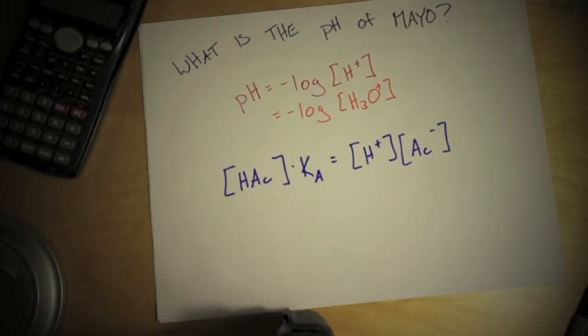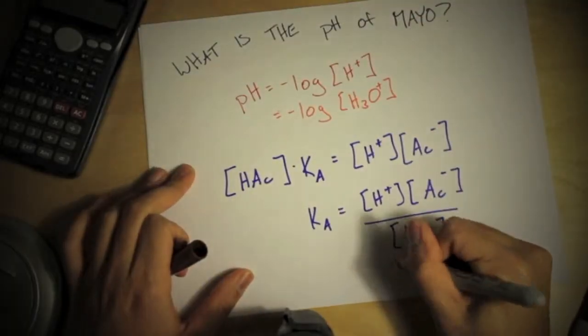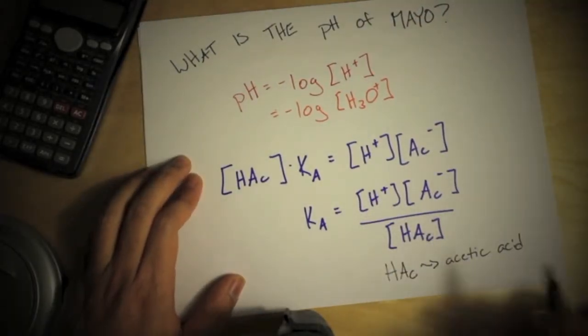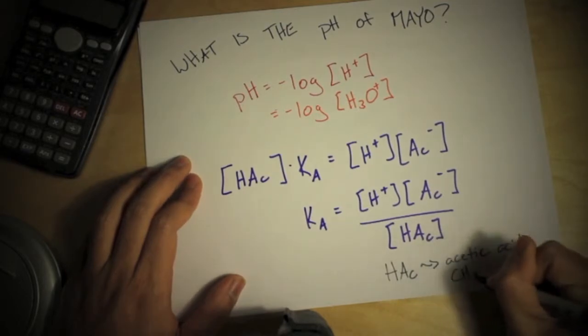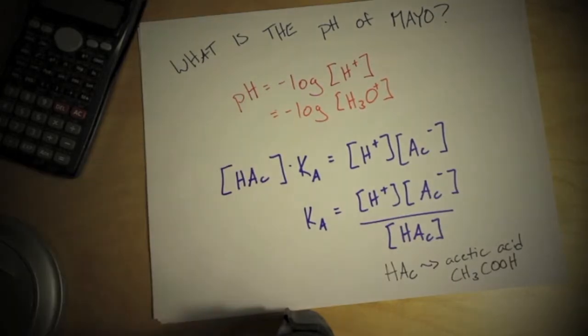Obviously you can tell I'm not a chemistry major. If I rearrange this I can see that the dissociation constant is equal to, and in this case my acid is going to be acetic acid which is CH3COOH. That's going to come into play later on.